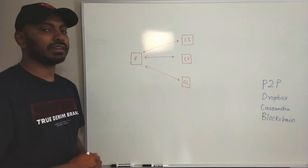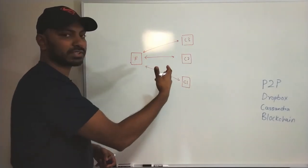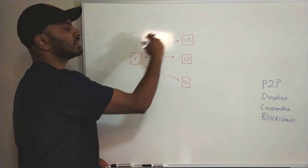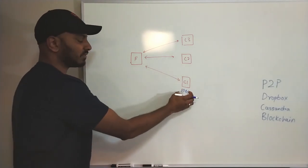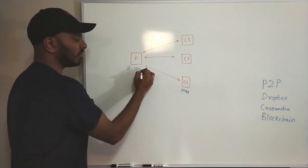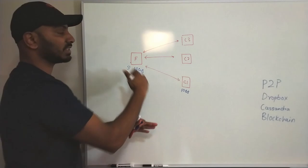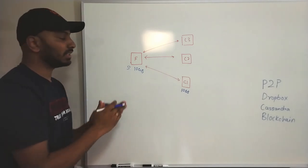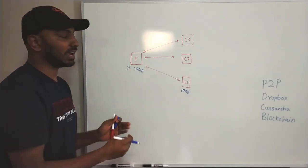Let's understand this problem in depth and then jump to Merkle trees. Say you have client1, client2, and client3 in a system like Dropbox. As soon as you put a file in client1, it gets synced to the server, and from the server the files are replicated to the other two clients. Consider this file is 10 GB. The client uploads that file to the server, and then it's synced to client2 and client3. Most of the time the copy, download, and upload process works, but there are times when files get corrupted during uploading or downloading.